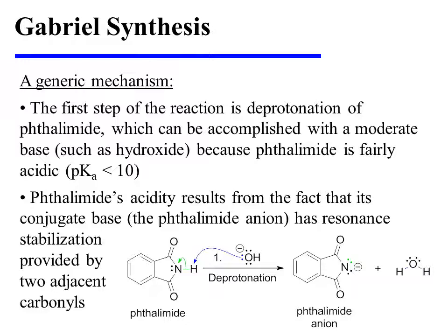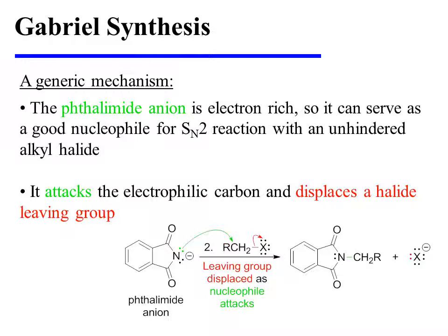Thalamid's acidity results from the fact that its conjugate base, the thalamid anion, has resonance stabilization provided by two adjacent carbonyls. But of course, the thalamid anion is electron-rich, so it can serve as a good nucleophile for SN2 reaction with an unhindered alkyl halide.